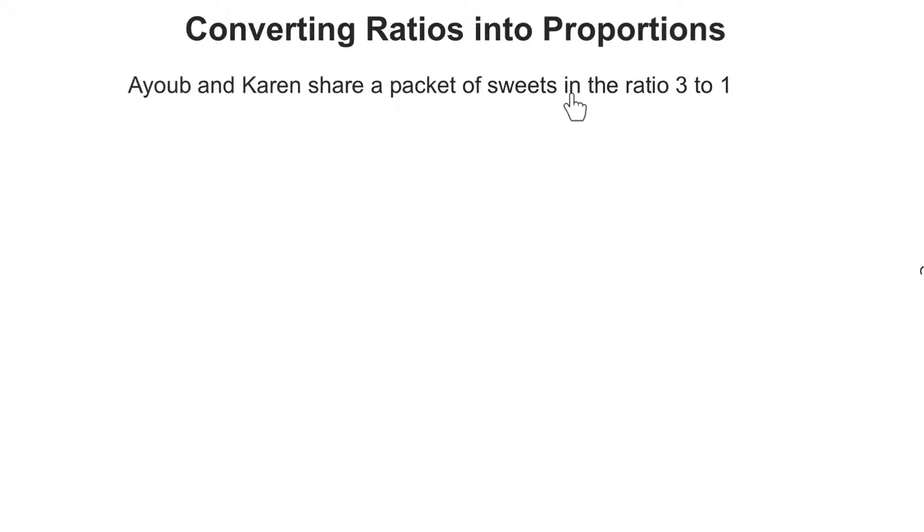Ayoub and Karan share a packet of sweets in the ratio 3 to 1. So if I write A for Ayoub and K for Karan, Ayoub's ratio is 3 and Karan's ratio is 1, 3 to 1 respectively.